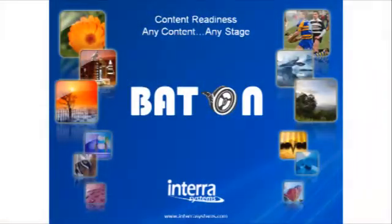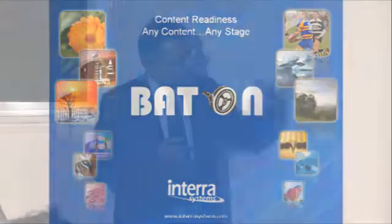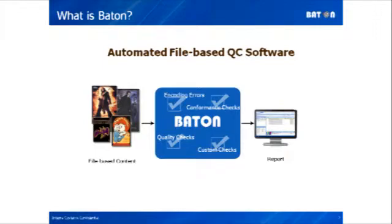Before I begin talking about Baton, let me spend a few seconds talking about Intera because many of you may not know who we are. We are a small Silicon Valley company from Cupertino, one block outside Apple. We do two products. Baton is for file-based content verification. We also do another product called Vega — that's for analyzing encoded media streams. Right now, almost every major commercial encoder in the market is tested using Vega. With that brief introduction, let me tell you what we do in Baton.